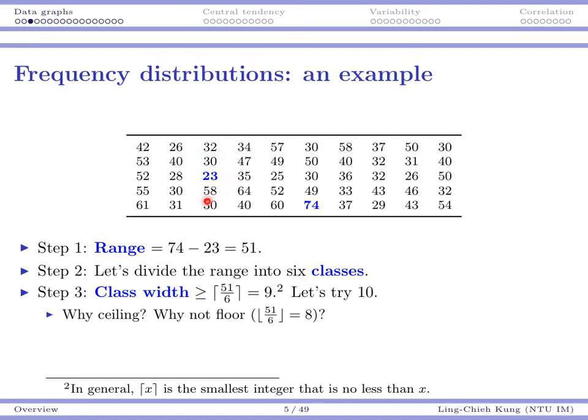For this particular example, the first step is to find the minimum and maximum numbers. I want all my classes together to cover all these numbers, so I calculate something called range, which is the maximum number minus the minimum number. That's going to be 51 for my data set.